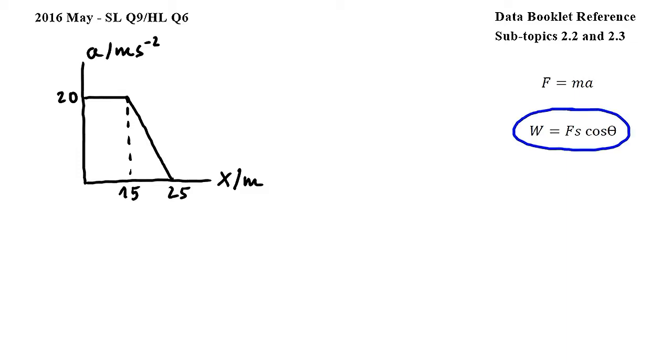Let's start by using this equation from subtopic 2.3, where W is work, F is force, S is distance, and theta is the angle between the force and the direction of the distance traveled. So I will write W is equal to, and then I will bring in this equation from subtopic 2.2, where F is force, M is mass, and A is acceleration, and I will replace F by MA in the equation below. So I will get M times A times S.